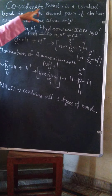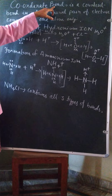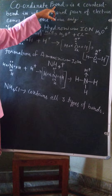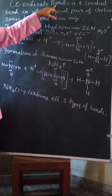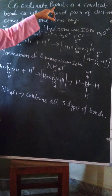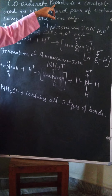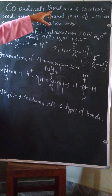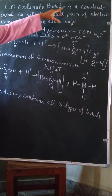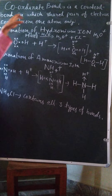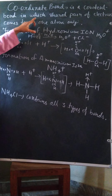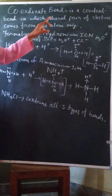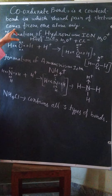This is the last session of lesson 2 for class 10 chemistry. The topic is coordinate bond. Two types of bonds we have already seen: ionic bond and covalent bond. And this is the third type of bond, coordinate bond.